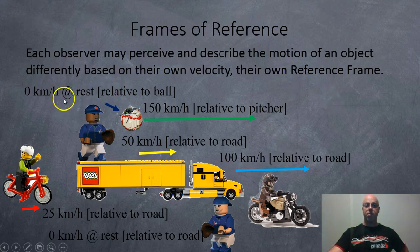So here we've got a ball with a fly on it. Compared to the ball, the fly is moving at 0 km per hour. The pitcher is going to throw the ball at 150 km per hour, so it's moving away from the pitcher at 150 km per hour. But the ball was already on top of a track moving at 50 km per hour. And up ahead, there's a motorbike who is doing 100 km per hour relative to the road.